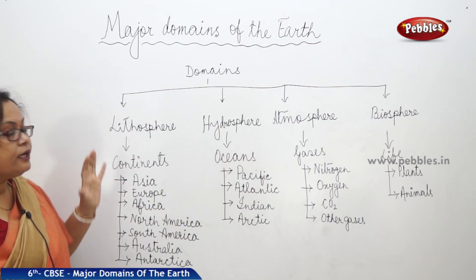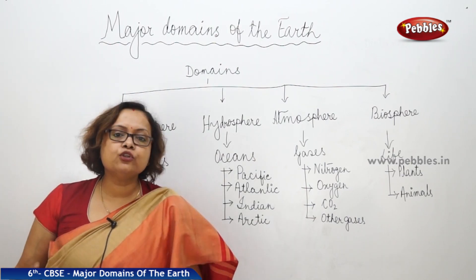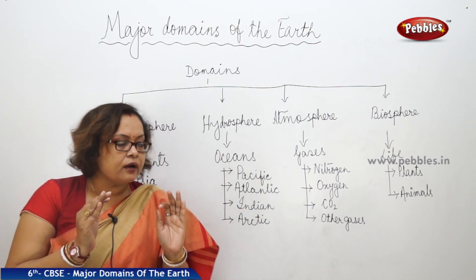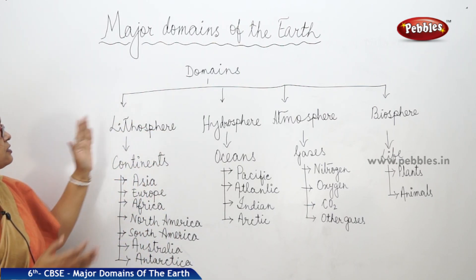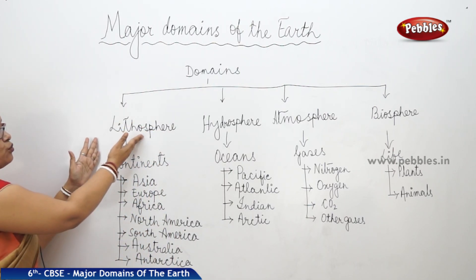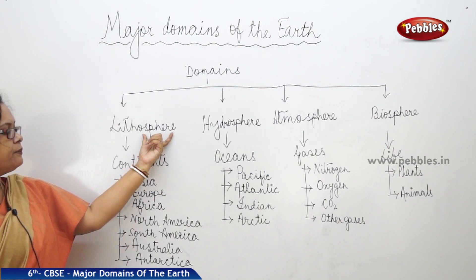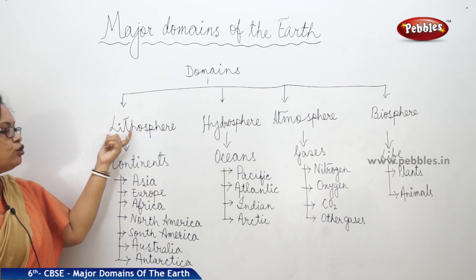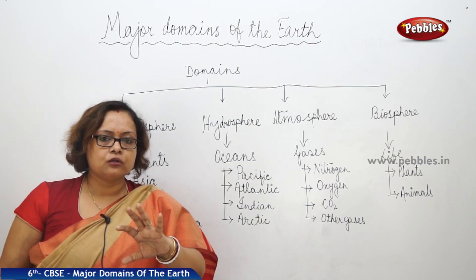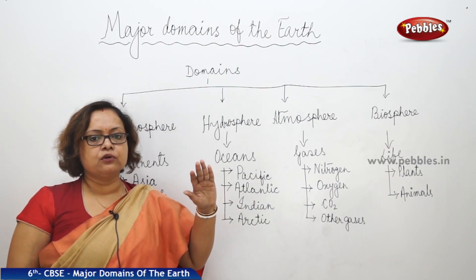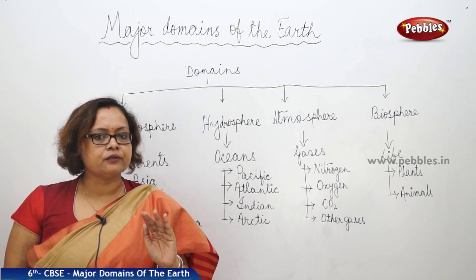The solid portion of the earth is known as the lithosphere. The word lithosphere is divided into two parts: litho and sphere. Litho means rock, so the rocky part of the earth is known as the lithosphere.